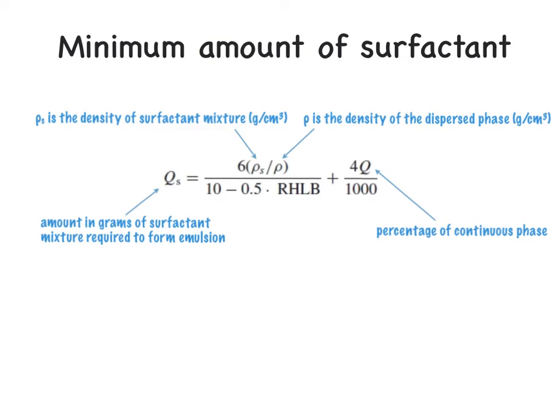Next, we'll take a look at calculating the minimum amount of surfactant that's necessary. In this case, these are our QS calculations. QS is the minimum amount of surfactant necessary to form the emulsion. That's going to be equal to 6 times the density of the surfactant mixture, ρS, over the density of the dispersed phase. That whole term will be divided by 10 minus 0.5 times your RHLB value. And then we will add to that 4 times Q, which is the percentage of the continuous phase, divided by 1,000.